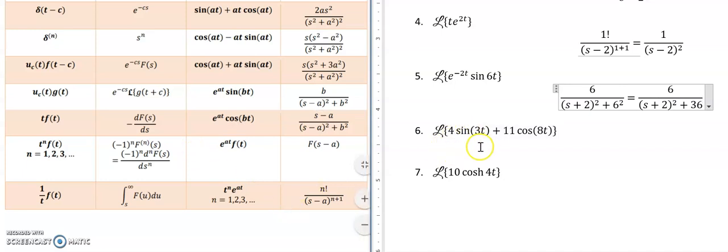Now we just have our regular trig functions. If you have a function that's being multiplied by a constant, you just multiply by the constant. So this is like saying, I want to take the Laplace transform of sine 3t, and I can pull the 4 outside, just like I can pull the 4 outside the integral. So in that case, I'm just going to have 4 times whatever the Laplace transform of sine 3t is, and then I'm going to have 11 times the Laplace transform of whatever cosine 8t is.